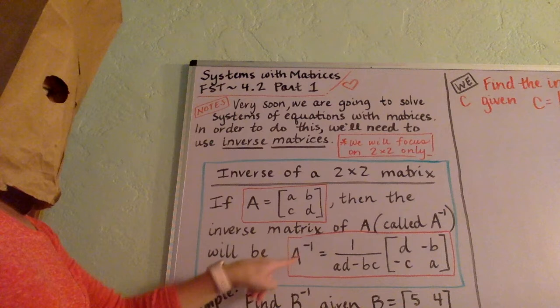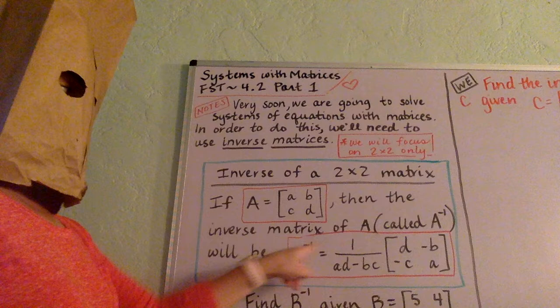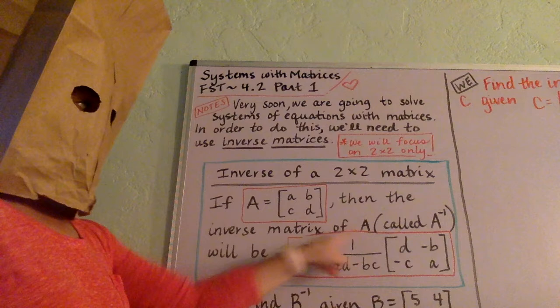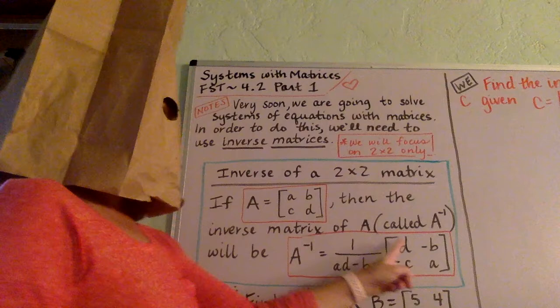To find the inverse, notice that we use that same little notation, we put a little negative one right there. You do one over this times this, a times d, minus upper right times lower left. That's a little fraction that goes out in front.